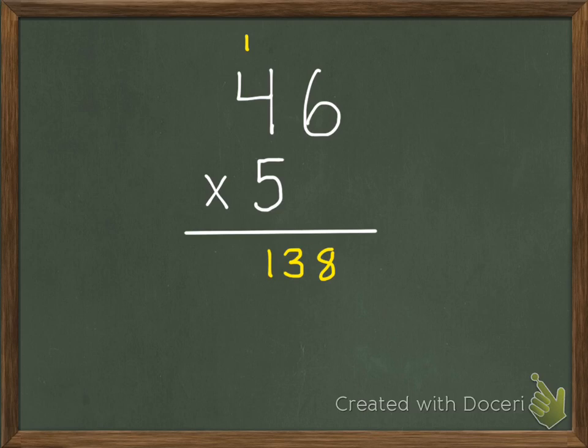So this 5 in our bottom factor is really a 50, so we need to remember to put a 0 down here. Now we can multiply our 5 times each digit in our top factor. Once again, we start with the 1's place value.